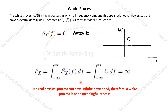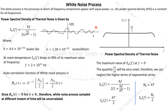We now move to the more practical version: the white noise process. This is what we encounter in communication systems, which are mostly affected by white noise. Communication systems — transmitters, receivers, modulators, and demodulators — are fabricated from electronic components, and in these components we find certain kinds of noise. One very popular noise in electronic components is thermal noise.